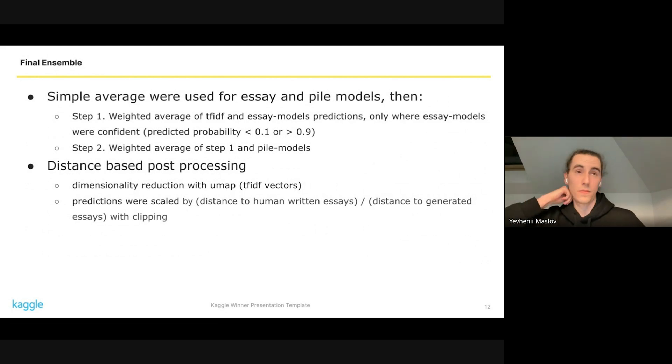We took simple average for probabilities from the data. Then we aggregated by taking a weighted average of TF-IDF probabilities and essay models probabilities, but only where the models were not confident enough. Then we took again a weighted average of first step and probabilities from pile and models. We also used distance-based post-processing: took TF-IDF vectors, reduced dimensionality using UMAP, calculated the distance to human-written essays and distance to generated essays, and scaled probabilities by the ratio.